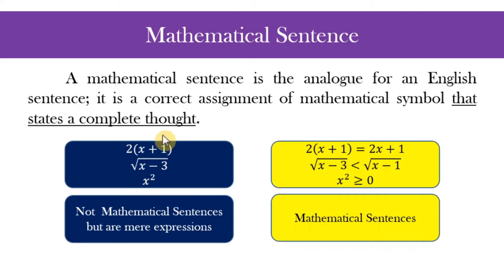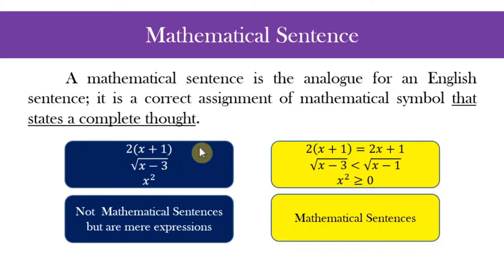Let us have some examples. These are the expressions presented in the last video. For example, the first one is just expressing that we have a variable — an unknown number. If we add it to one and multiply the result by two, it becomes a mathematical sentence when we say the sum of x and one, multiplied by two, is equal to the product of two and x added to one.